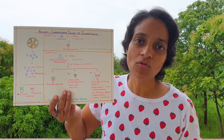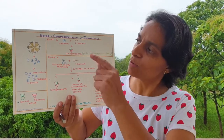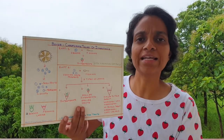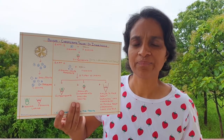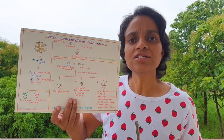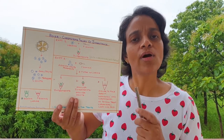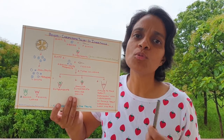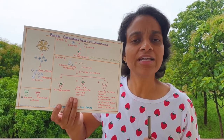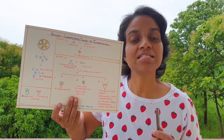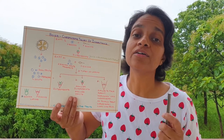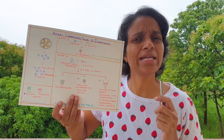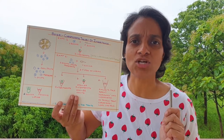Theodor Boveri came up with the chromosomal theory of inheritance. Sutton also, at the same time, came up with the chromosomal theory of inheritance by studying grasshopper chromosomes, which were very distinct from each other.